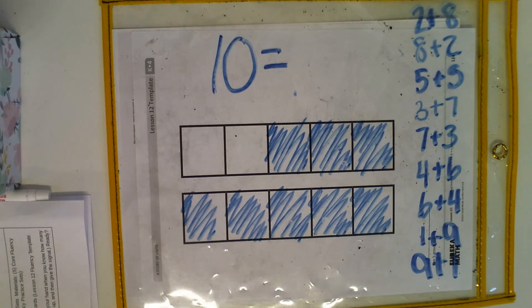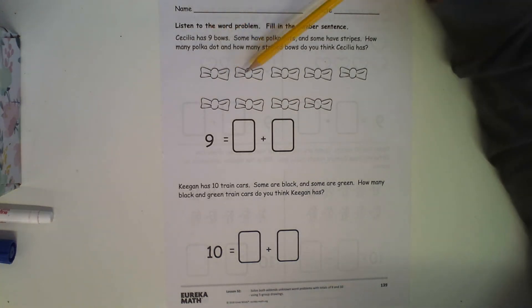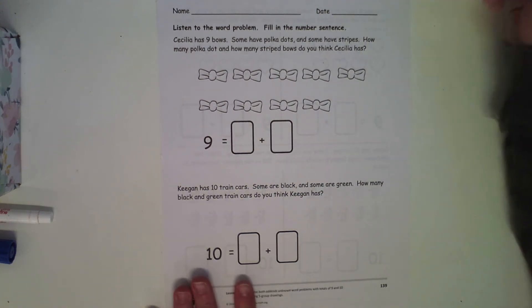All right, kindergartners, we're going to go ahead and get started on our worksheets. You can go ahead and erase. We're working on problem set 32. You're going to need your pencil and your crayons. Our first problem says: Cecilia had nine bows. Let's count — one, two, three, four, five, six, seven, eight, nine. Nine bows all together. Some have polka dots and some have stripes. You can give some of them polka dots and some of them stripes, but we cannot leave any plain. I'm going to give three of them polka dots.